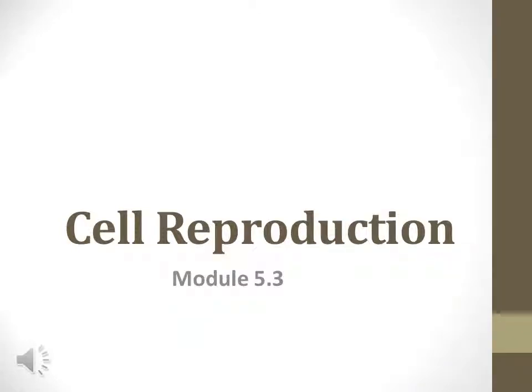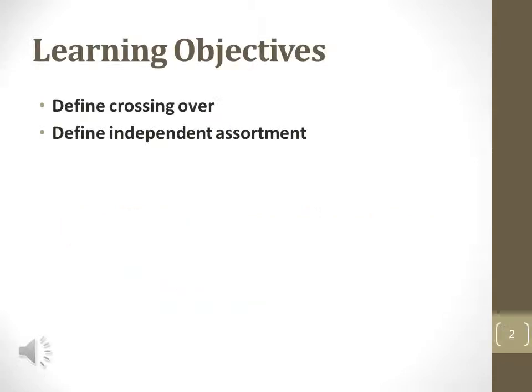This is the third narrated presentation for Biology 101, Module 5: Cell Reproduction. During this presentation, crossing over and independent assortment are discussed.